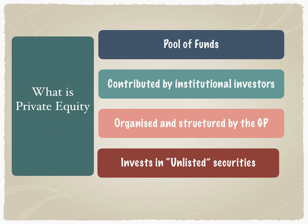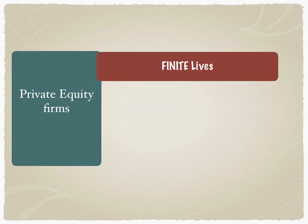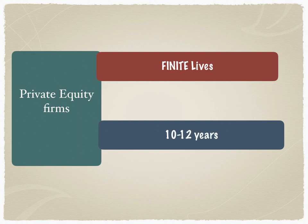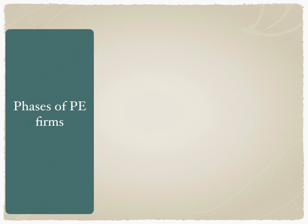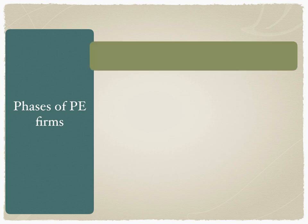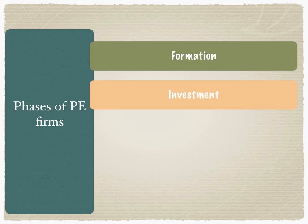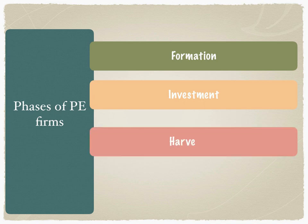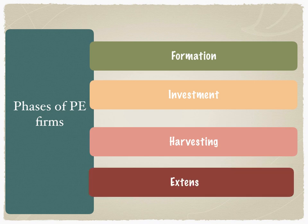Private equity investors play a very sophisticated role in the growth of the company. It's important to understand that the private equity firm therefore has a finite life — typically lasting between 10 to 12 years. Right from the time of starting the firm to exiting and winding up the fund and returning investments to the investors, the phases of a private equity firm run like this: the first phase is the formation phase, closely followed by the investment phase, then the harvesting phase, and the fourth phase is the extension phase.